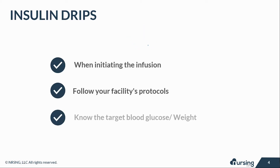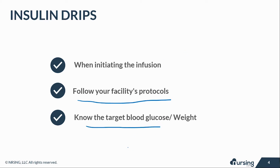When initiating the infusion, make sure you follow the facility's protocols. The facility I work at has a set of instructions for starting an insulin infusion. Follow your facility protocol and know the target blood glucose and the patient's weight. The target blood glucose matters — if it's 150, that's what you're aiming for. If their blood sugar is 800 and you just want to get it down to 200, know that target. This is a very good starting point when you start an insulin infusion.